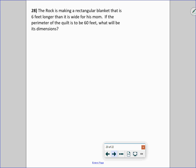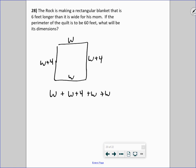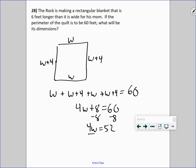All right, the rock is making a rectangular blanket that is 6 feet longer than it is wide. You don't actually have to do this one as a system. Let's draw a picture. This is the width, and the other side is W plus 4. Then you just add up all the sides. W plus W plus 4 plus W plus W plus 4 equals 60, or 4W plus 8 equals 60. Subtract 8 from both sides. 4W equals 52. Divide both sides by 4, and you get W equals 13. So if this is 13, then this is 13 plus 4, which is 17. So the blanket is 13 feet by 17 feet.